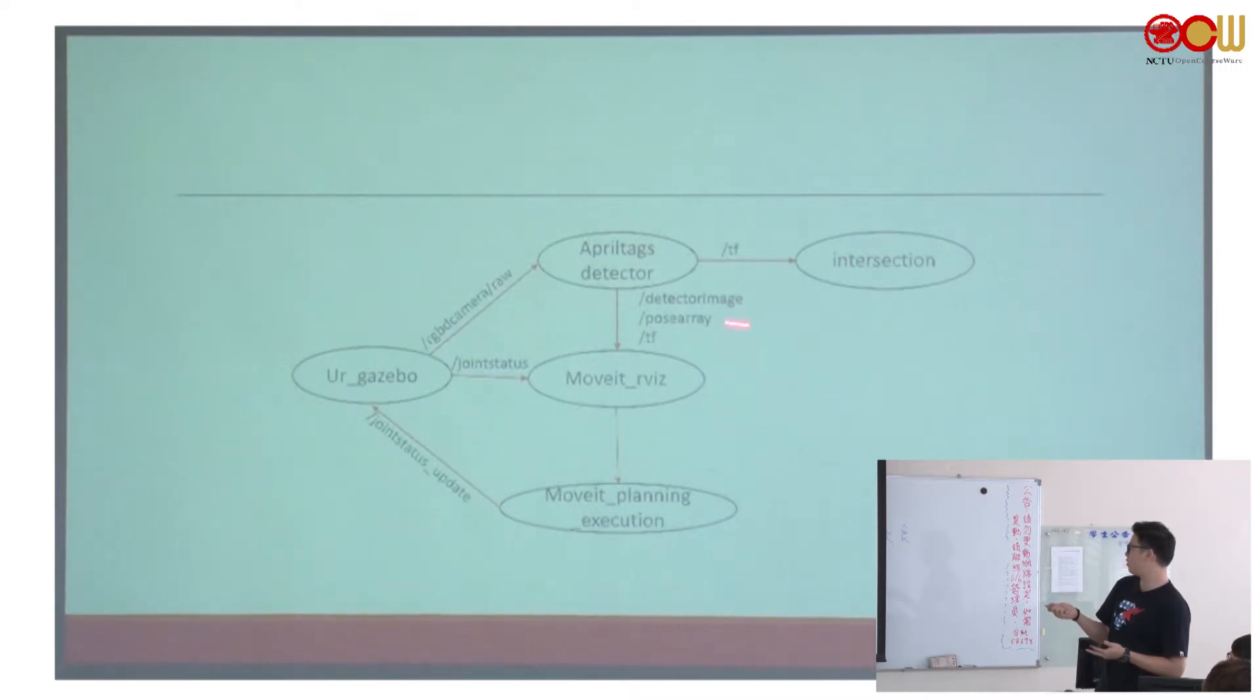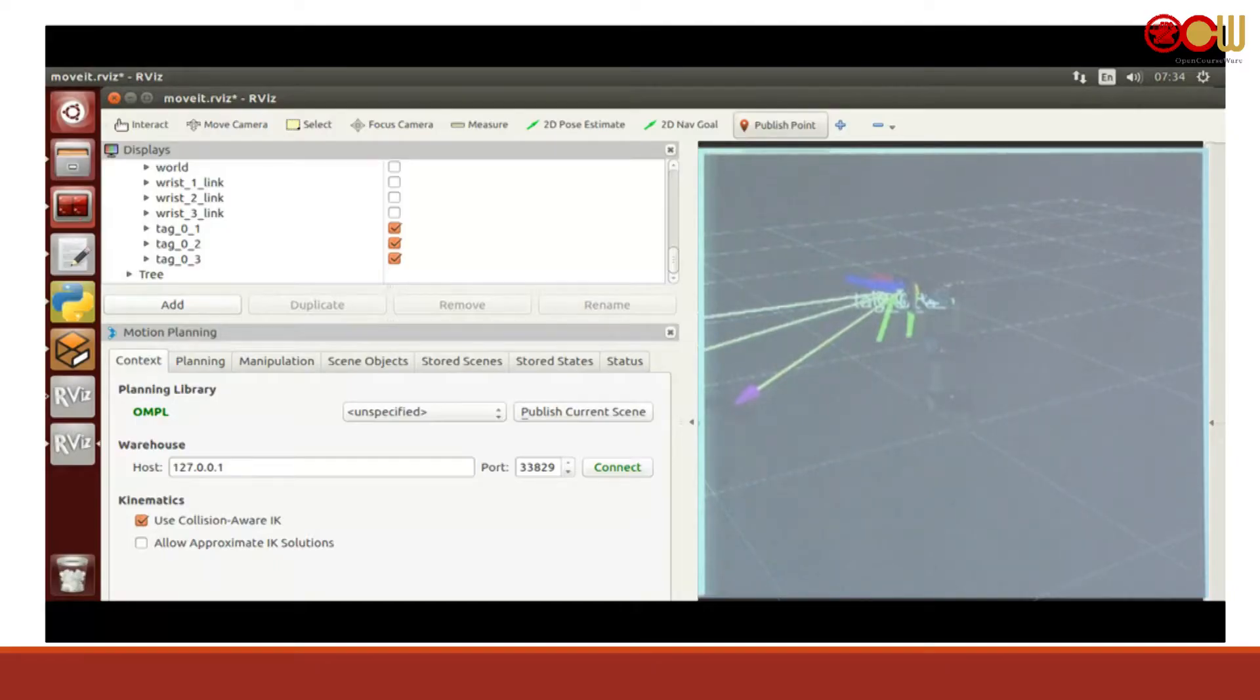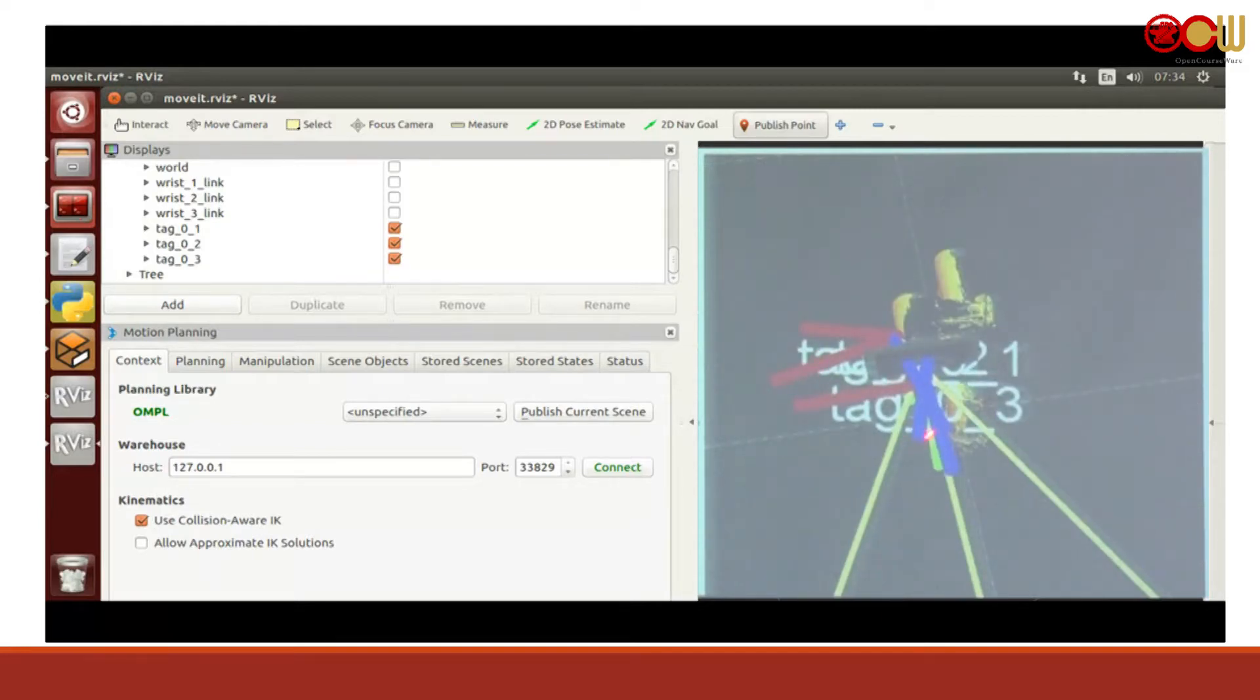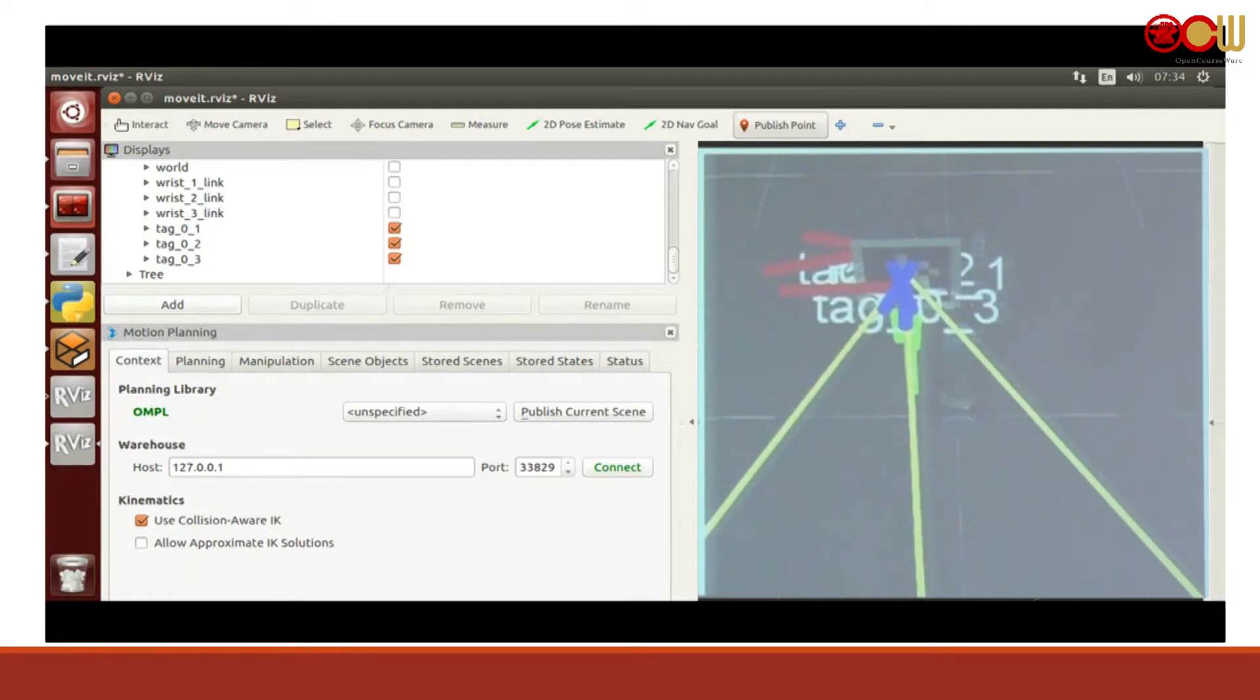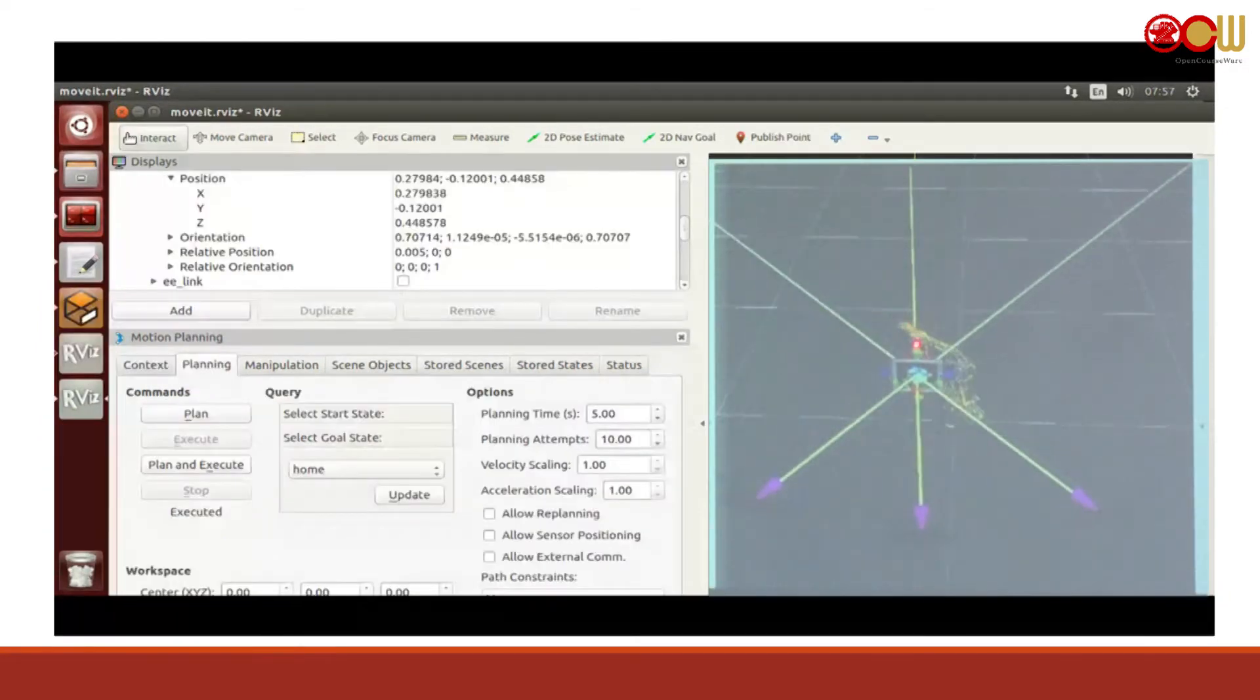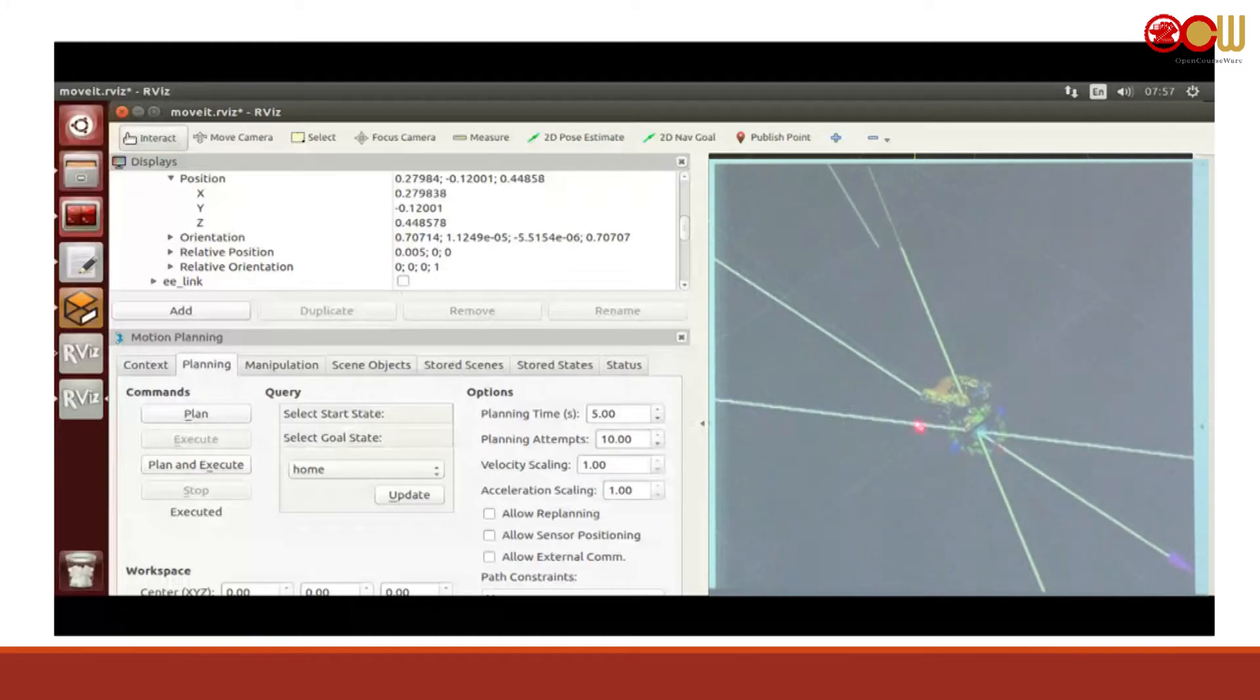The intersection node will subscribe to the AprilTag detector transformations. So this is the demo video. I've run AprilTag detector and Gazebo. You can see there are three transformations from the AprilTags. As you can see, the transformation of each camera published is not quite accurate. Some is far and some is near. Although I'm using Gazebo in a perfect situation, it still has some errors. I'm using this information from the AprilTag detector to find the intersection.